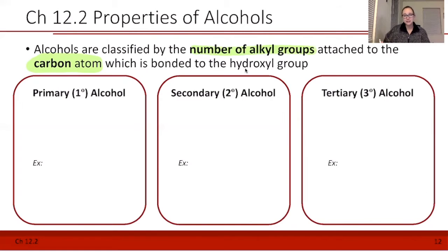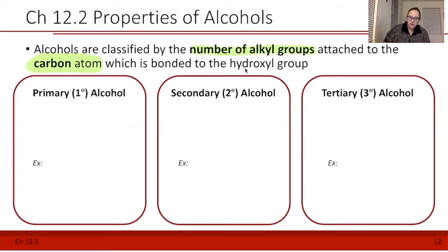There are three different types we're going to talk about. The first one is called primary, the second one is called secondary, and the third one is called tertiary. These are also shorthand by little numbers — we can put one with a degree sign, two with a degree sign, or three with a degree sign to show the different types.